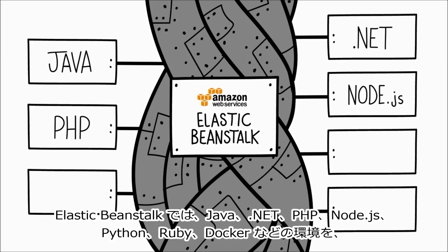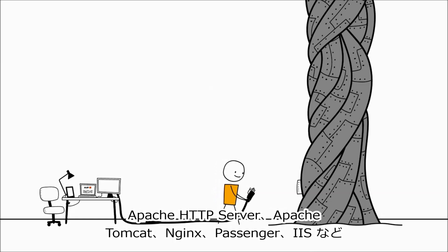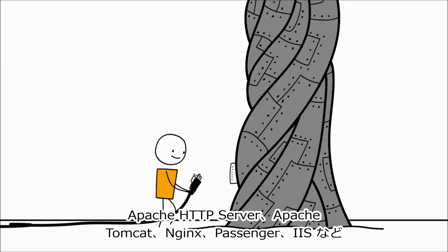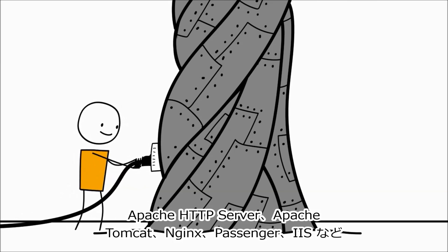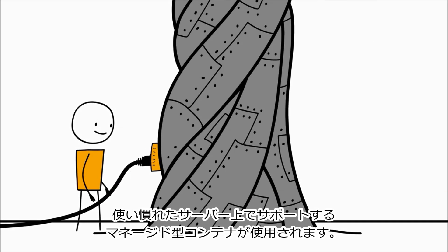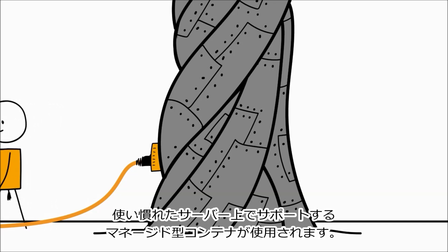.NET, PHP, Node.js, Python, Ruby, and Docker on familiar servers such as Apache HTTP Server, Apache Tomcat, NGINX, Passenger, and IIS.